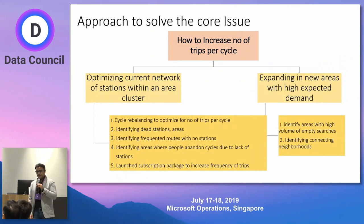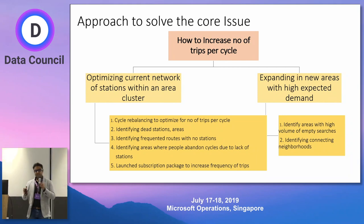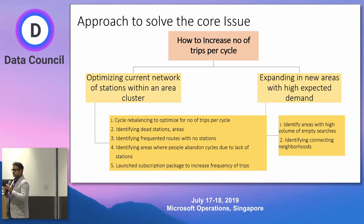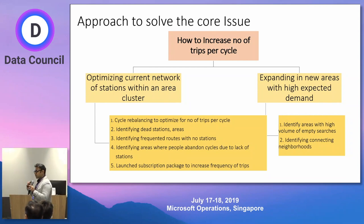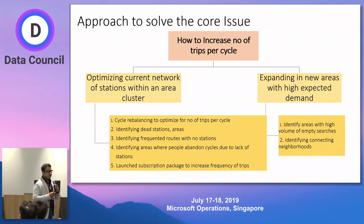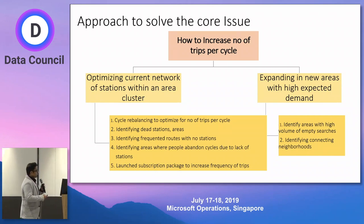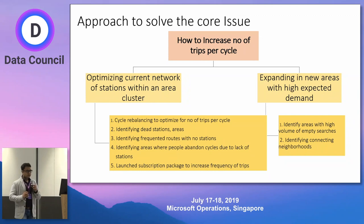Let's divide this problem into two parts. The first part is how do you optimize the current network of stations? If I have 10 stations and 500 bicycles, how do I extract maximum revenue from them? The second part is how do I expand to new areas where I have higher expected demand? Breaking down the problem of optimizing the current network, there are five things we need to take care of.